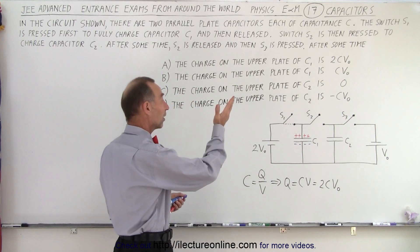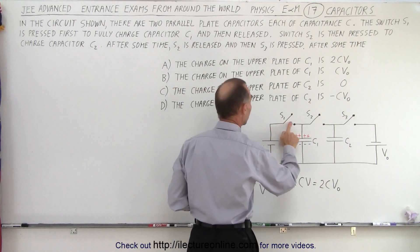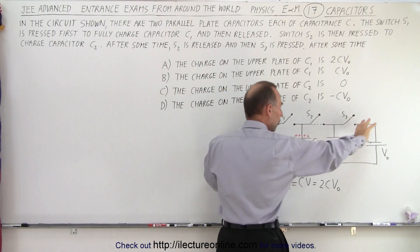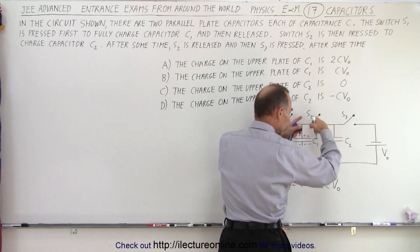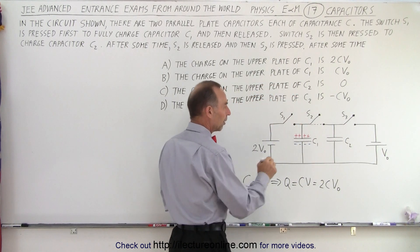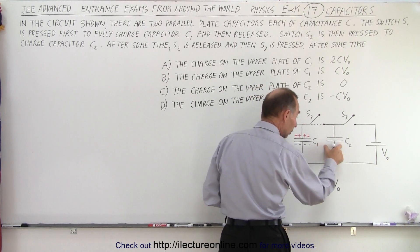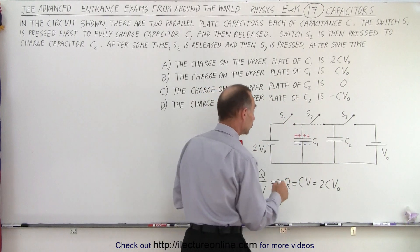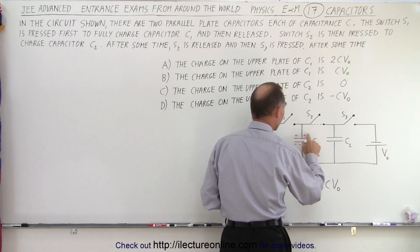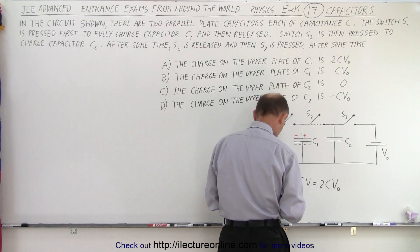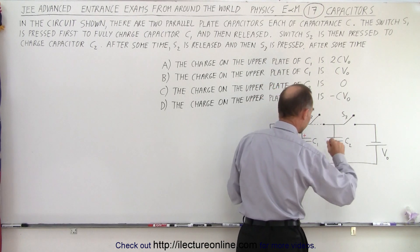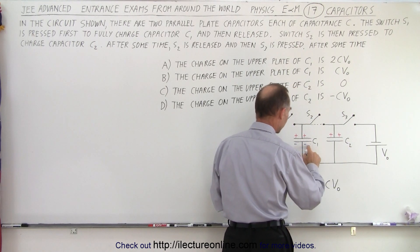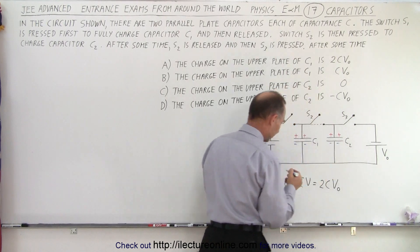All right, now we open switch S1, so this is now open, and now we close switch S2. Notice there's no batteries connected to this circuit, the middle part of the circuit, but these two capacitors are now connected. They have equal capacitance C, that means that the charge is going to equally divide itself over the two capacitors. So a couple of these charges will then move over here and settle on this capacitor, which means that a couple of the negative charges also will move and settle onto this capacitor right there.